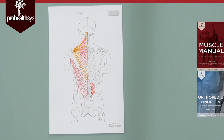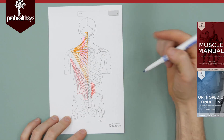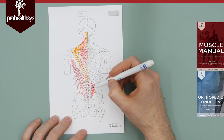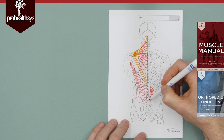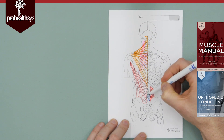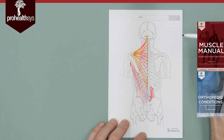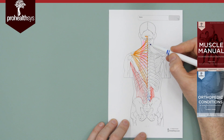After QL, let's go deep first before erectors. What's deeper than multifidae? Rotatoris. For rotatoris: one to two — it goes from transverse process to spinous process one to two segments above. That carries all the way up to C2.